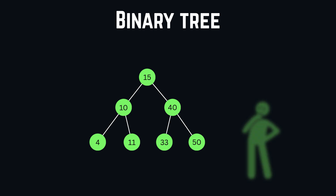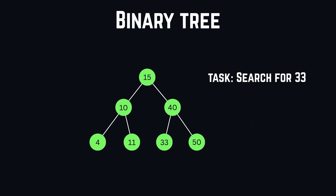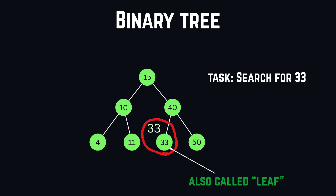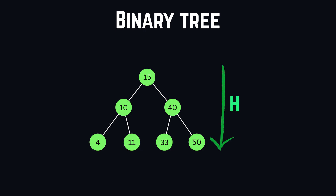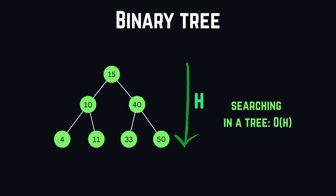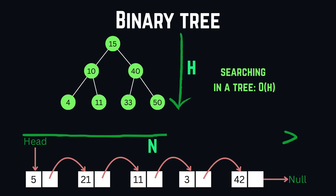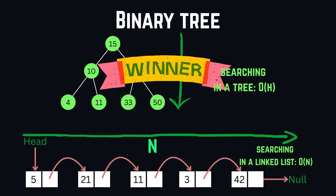Binary trees are efficient because of how they allow us to search for elements. To check if 33 exists in our binary tree, all we have to do is compare the value with the current node — if it's larger we move right, if it's smaller we move left. We continue until we find the node or reach a node with no children. This only requires O(h) time, where h is the height of the tree. Compared to searching in a linked list, where in the worst case we iterate through the entire list in O(N), the binary tree is much more efficient.